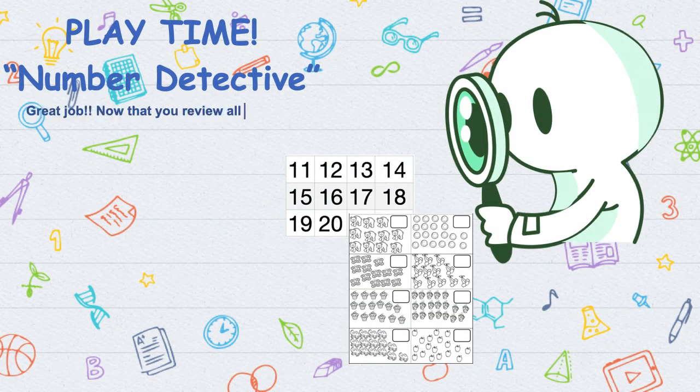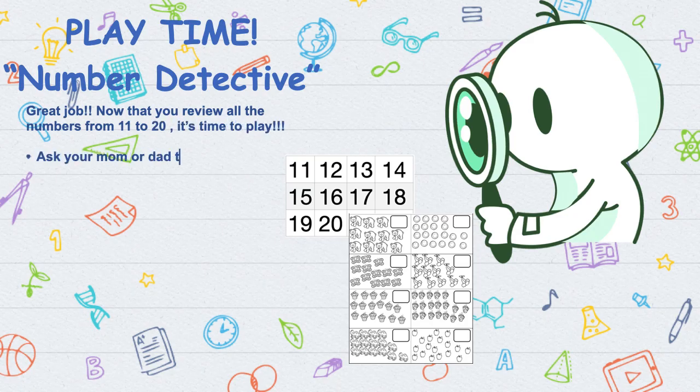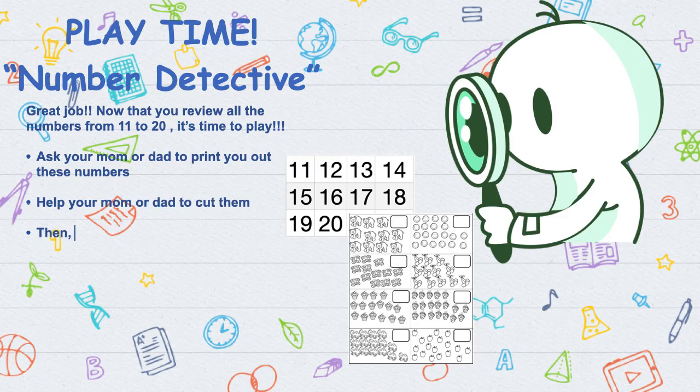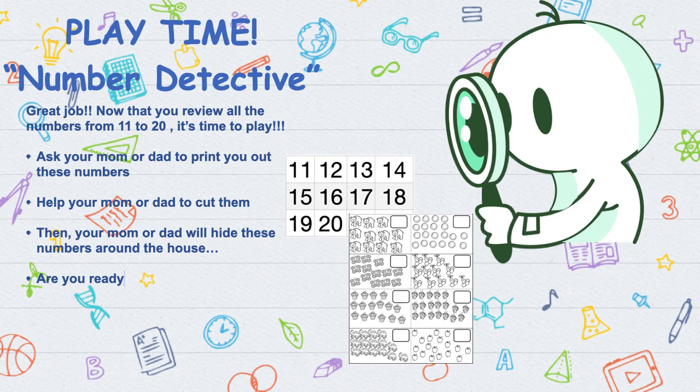Great job! Now that you review all the numbers from eleven to twenty, it's time to play. Ask your mom or dad to print you out these numbers. Help your mom or dad to cut them. Then your mom or dad will hide these numbers around the house.